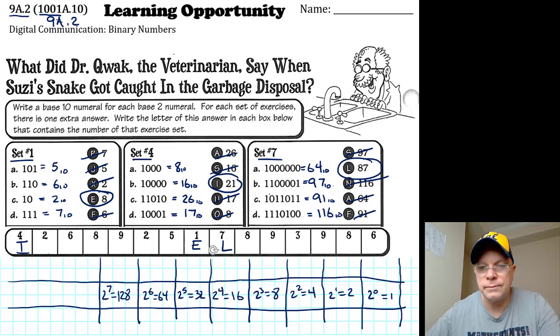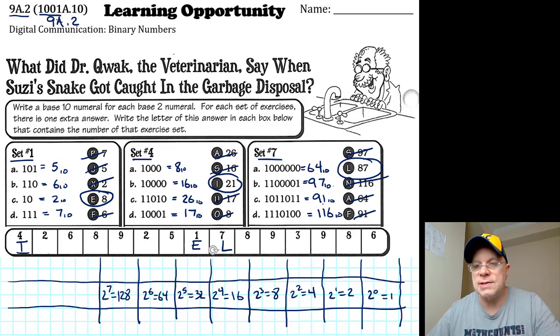7a is sixty-four in base ten, 7b is ninety-seven in base ten, 7c is ninety-one in base ten, and the binary number for 7d is one hundred sixteen in base ten. After crossing out those correct answers, you're left with L, eighty-seven, letter L under the seven.